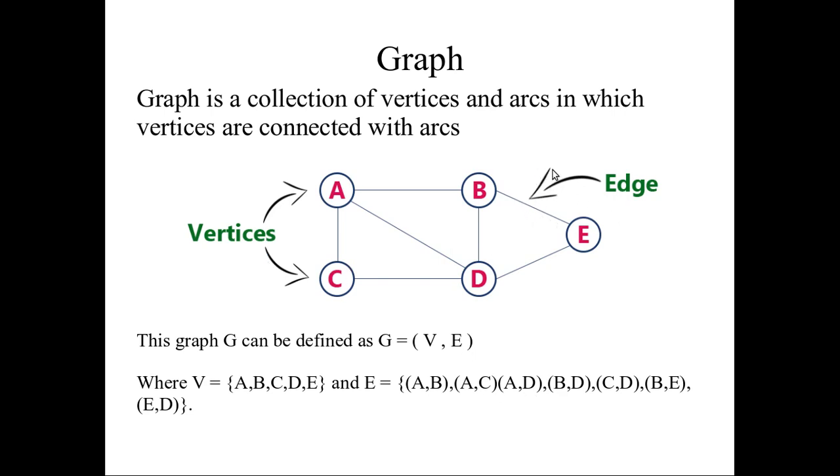It is also called as the connection or arc. So A, B, C, D, E are called vertices. E is called the edge which is representing the connection between two nodes, so A comma B, A comma C, A comma D, similarly.